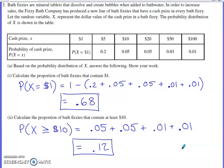This particular probability question involves bath fizzies, tablets that dissolve and create bubbles when added to bath water. In order to increase sales, the bath fizzy company is going to have a line of fizzies that have a cash prize in each one.